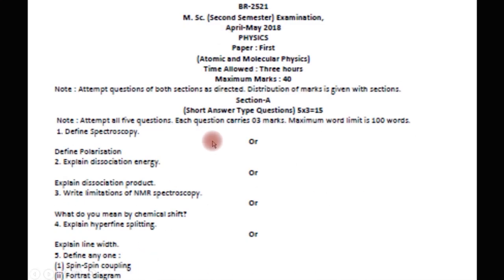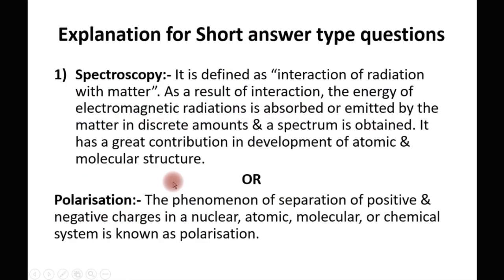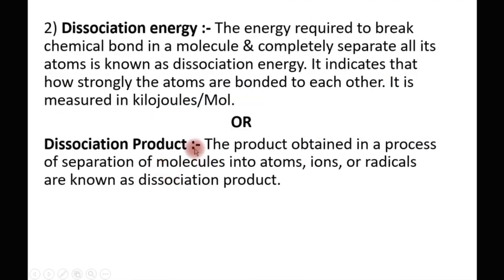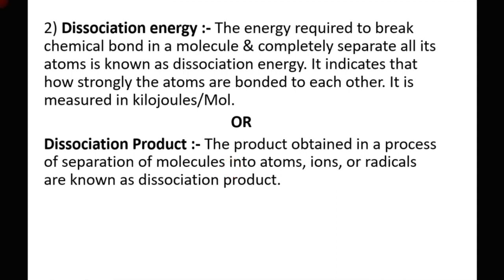The next question is: explain dissociation product. In any chemical process or reaction, we deal with reactants and products. Dissociation product is defined as the product obtained in the process of separation of molecules into their atoms. That means, after a dissociation process, the molecule gets separated into atoms, or atoms get separated into ions, and ions get separated into radicals. The product obtained in this process of dissociation — atoms, ions, or radicals — is known as the dissociation product.